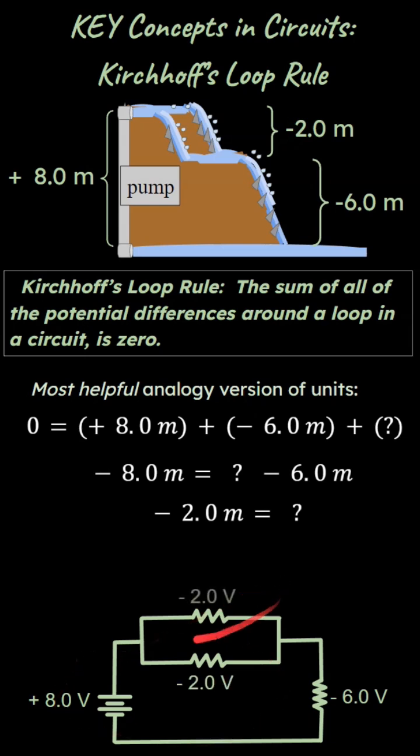You can also use the circuit diagram down here and treat them as the actual units that we need. Notice that the sum of a positive 8 and a negative 2 and a negative 6 is going to be zero.